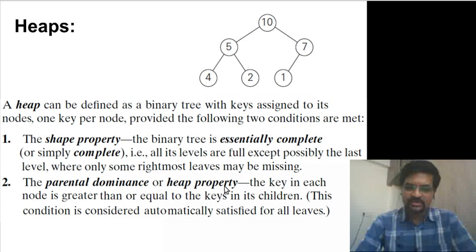Now the second property is heap property. It's also known as parental dominance. What it means is the key in each node is at least as large as the keys in children. 5 is greater than or equal to 4 and 2. 7 is greater than or equal to 1. 10 is greater than or equal to 5 and 7. The other nodes which are leaves don't have children, so they satisfy the heap property by default. So this particular binary tree satisfies both properties and hence it is a heap.